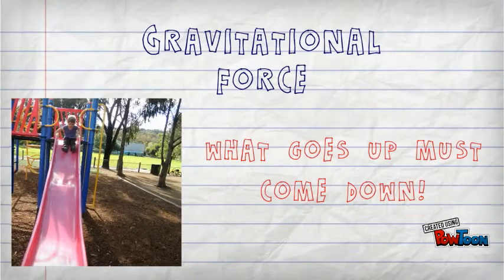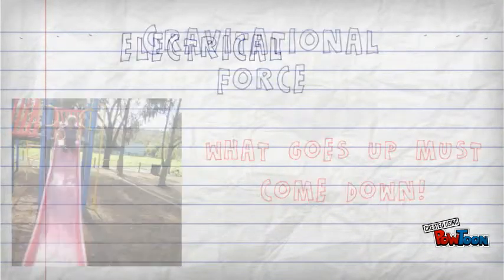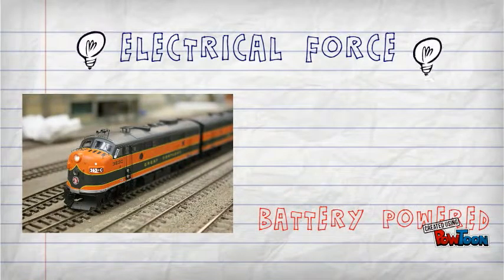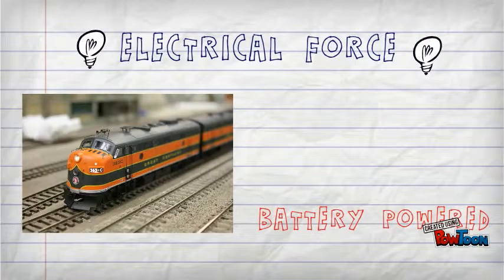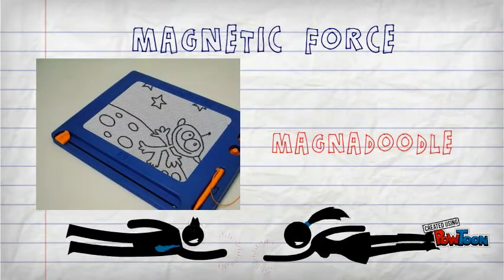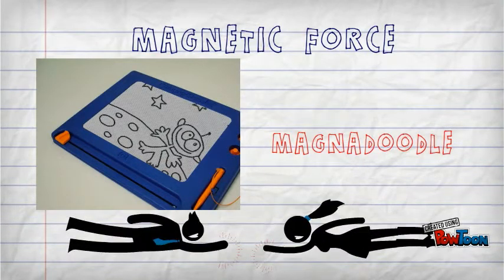What goes up must come down. We use gravitational force every time we go down a slippery dip. Did you know that any battery operated toy uses electrical force, just like this toy train? And what you might not have known is that the lines you create when you draw on a magnadoodle are made from tiny little magnets — this is magnetic force.